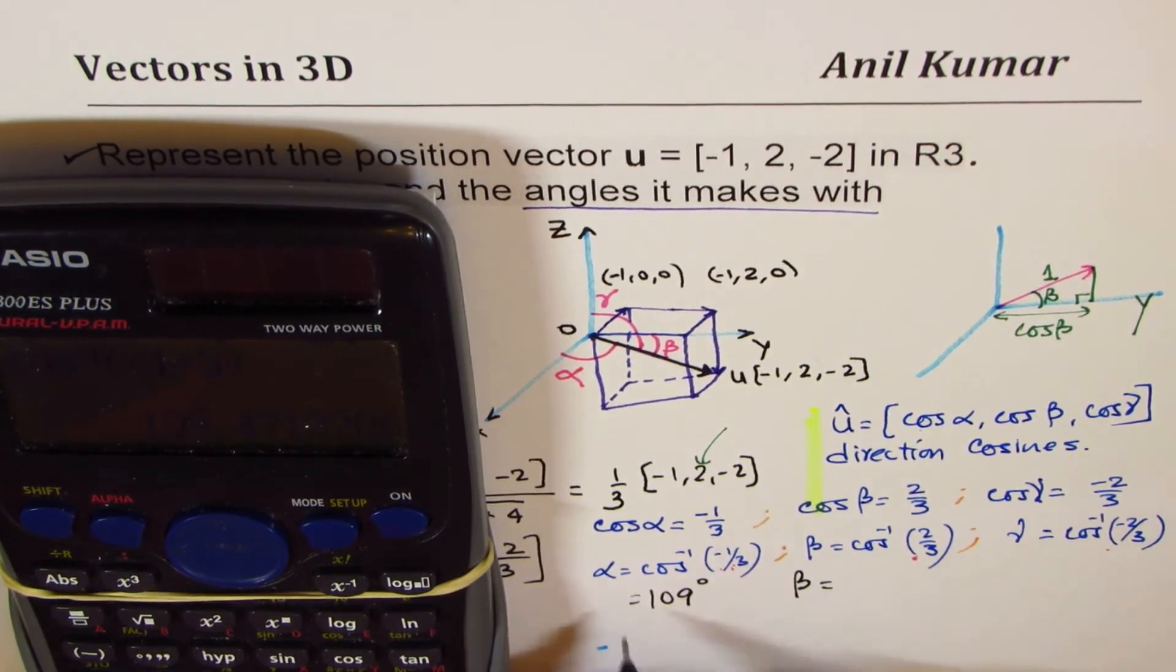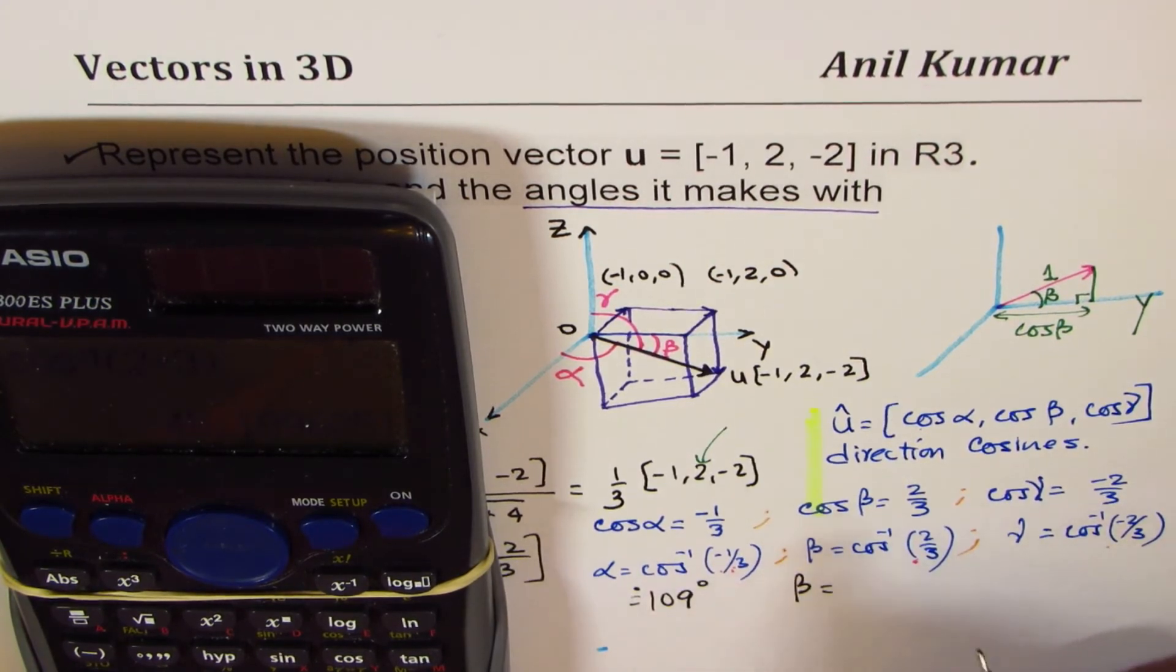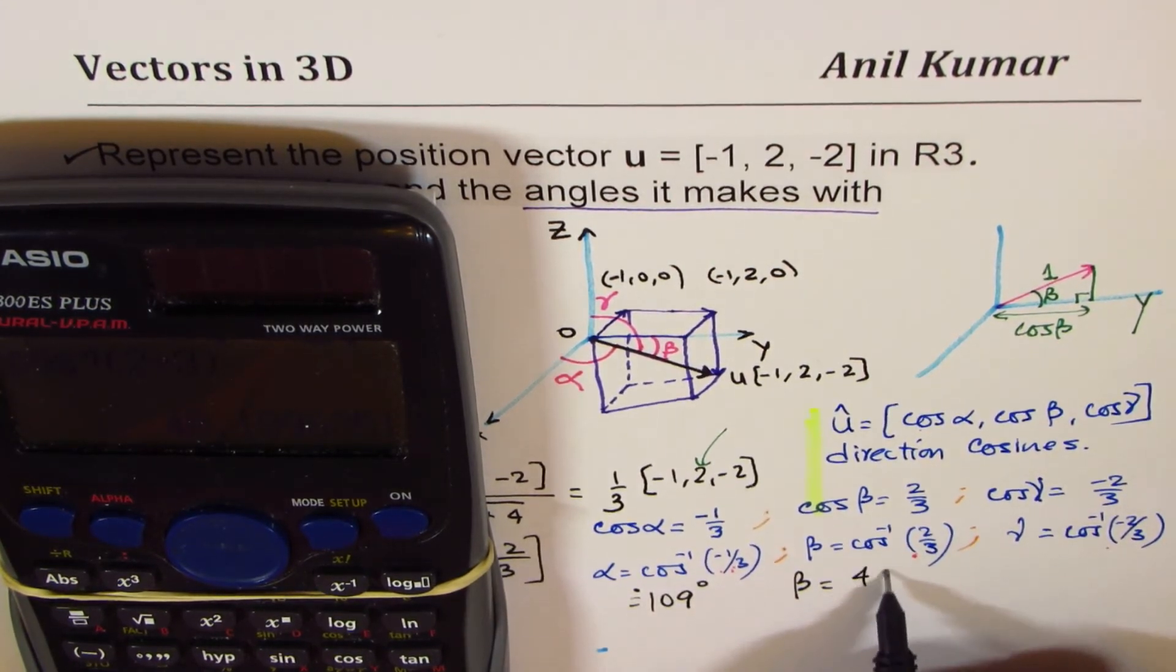β equals approximately cos inverse of 2/3, 2 divided by 3, equals to 48.1. We'll just write this as 48 degrees.